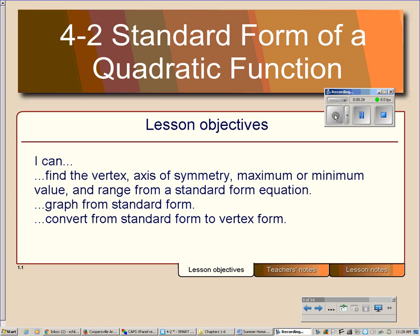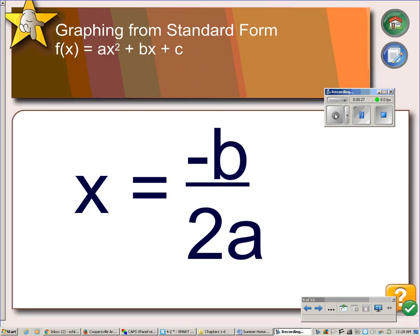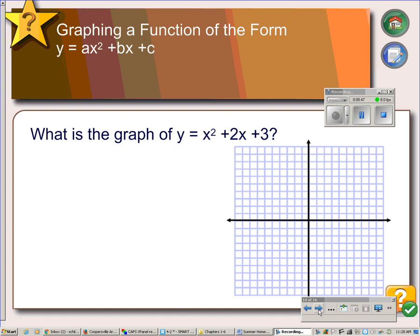So as you can see here, the standard form equation is one that's in the form y or f(x) equals ax² plus bx plus c. If your equation is in that form, you can find the axis of symmetry by using this formula: x equals negative b over 2a.